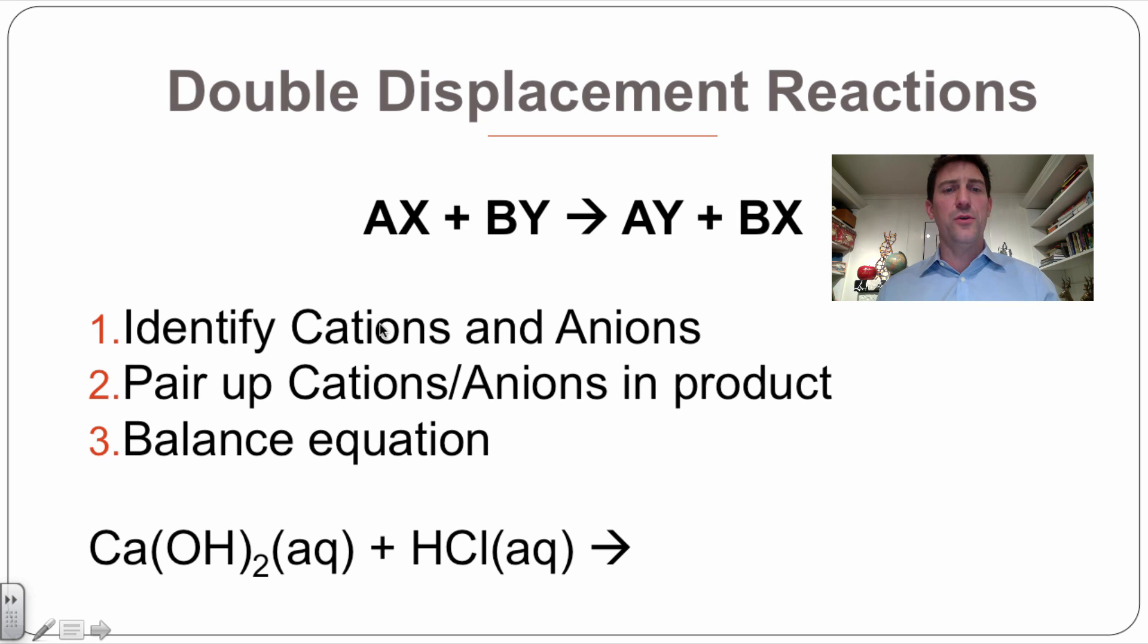So the first thing you need to do is identify the cations and the anions, pair up the cations and anions in the product, which I'll show you how to do that using this as an example. And then, of course, you need to balance the equation.